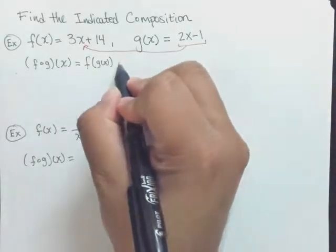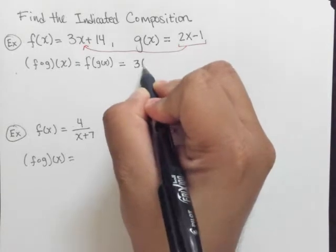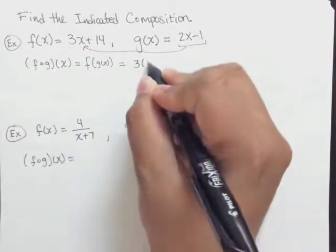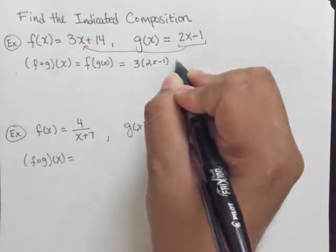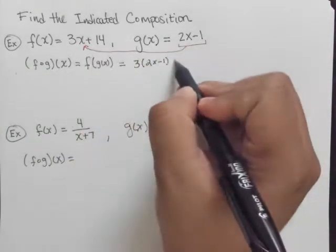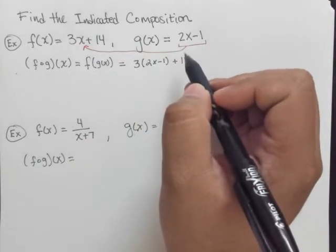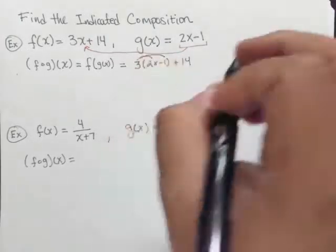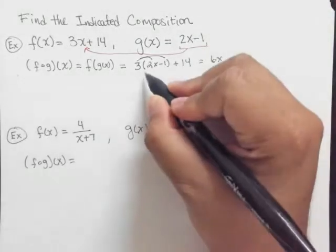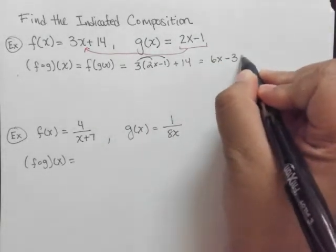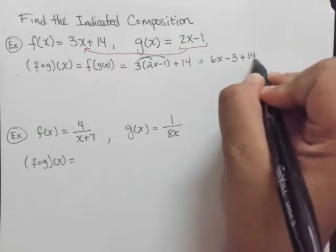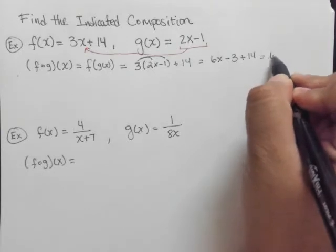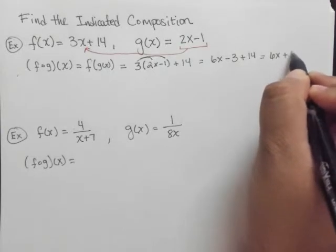So let's see here to figure this out. It is going to be 3 times and instead of x we're going to plug in g of x. But what was g of x? 2x minus 1 and then plus 14. Well we simplify this a little more by distribution. 3 times 2x is 6x and then 3 times minus 1 is minus 3 and then plus 14. So we have 6x minus 3 plus 14. When we combine like terms we get 6x plus 11.